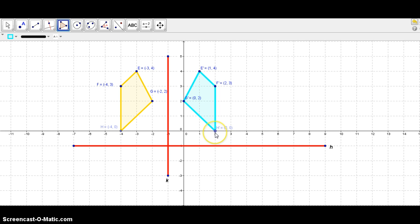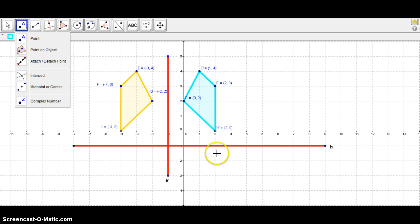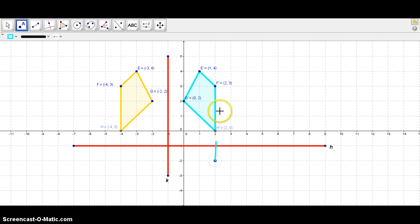Okay, let's start with H prime and this is one unit above. So, therefore, the reflection would be one unit below. And that would be this point here.